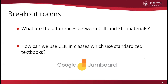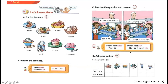The materials I pointed out in the Google Jamboard — it was probably fairly obvious which is which for CLIL or ELT. This one is an example of what you might typically find in an English textbook. It's developed based on a structured syllabus. Students only learn about vocabulary or grammar, and the focus is only on lower-order thinking skills, so students don't really need to think too much. And nothing new is being learned in terms of content.